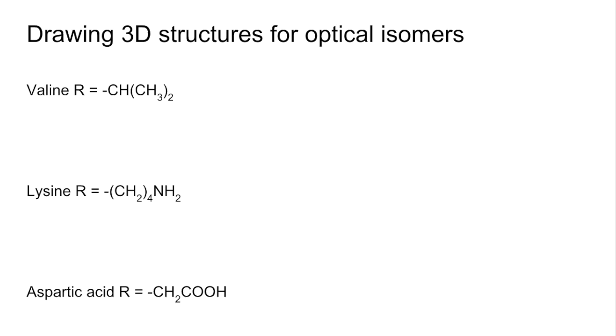One thing you could be asked to do is to draw the 3D structures for optical isomers of amino acids. Just to reassure you, you don't need to know specific amino acids. You would be told the R group, but you might be asked to do what we're going to do now.